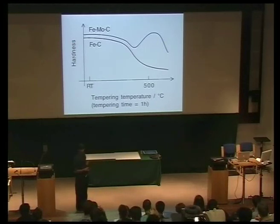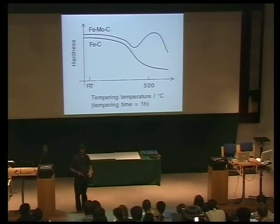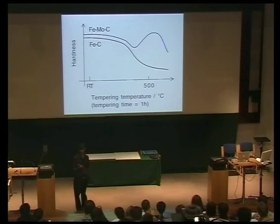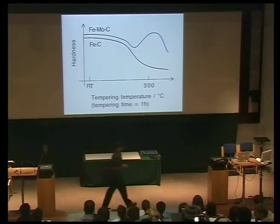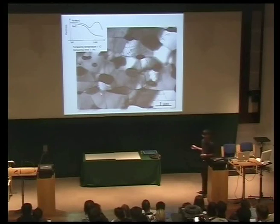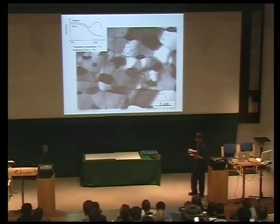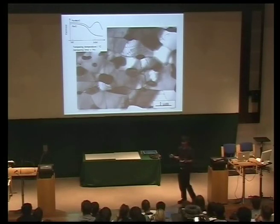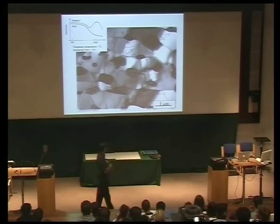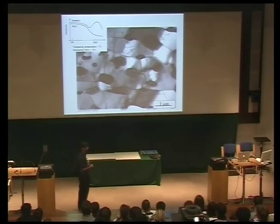This is known as secondary hardening, because the first hardening comes from forming the martensite. Then we get a drop in hardness as the carbon leaves the martensite and precipitates as iron carbides. And then the alloy carbides come in — very fine and with coherency strains — giving an increase in hardness. Just to show you the microstructures: when we just have iron-carbon, the cementite particles — Fe₃C — are pretty coarse because they form at a rate controlled by carbon getting out of martensite. Coarse particles don't contribute much to strength; you want fine particles finely dispersed throughout the material.